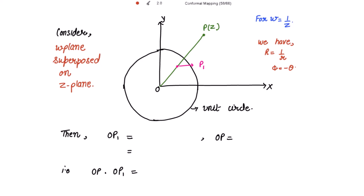Consider the z-plane with a unit circle |z| = 1. Take a point P with polar coordinates (r, θ), so the radius vector of point P has distance r and angle θ.